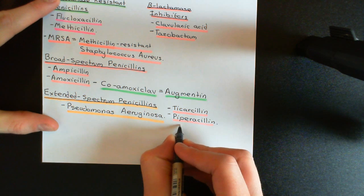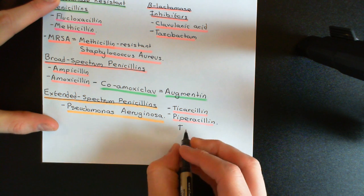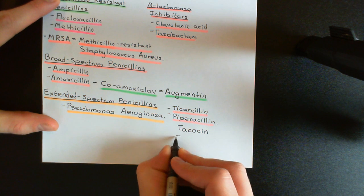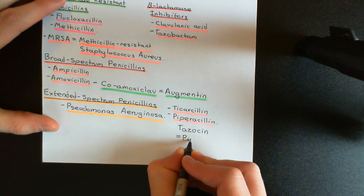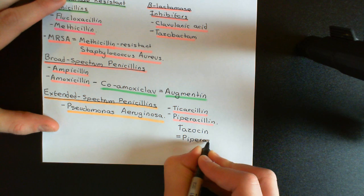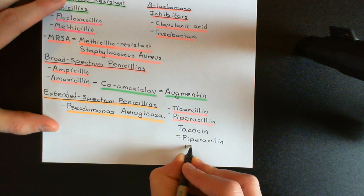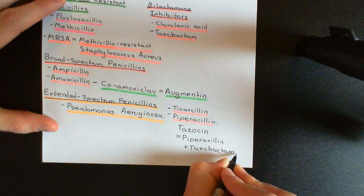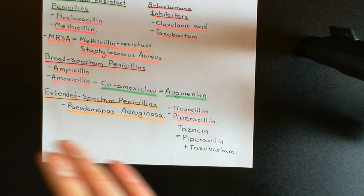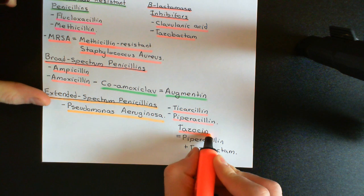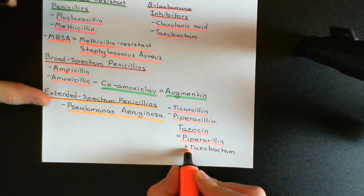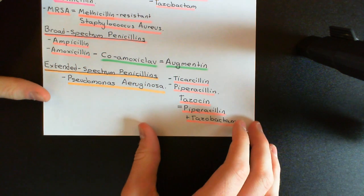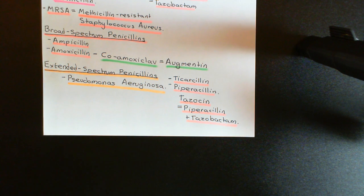Piperacillin in particular is often given with tazobactam, and that combination of piperacillin with tazobactam is known as Tazocin. So if you hear someone referring to Tazocin, this means piperacillin — this extended spectrum penicillin antibiotic — combined with the beta-lactamase inhibitor tazobactam to protect it. That is a drug you will often see used to clear respiratory infections with Pseudomonas aeruginosa. And that's all on the penicillin antibiotics — we'll end this video here.